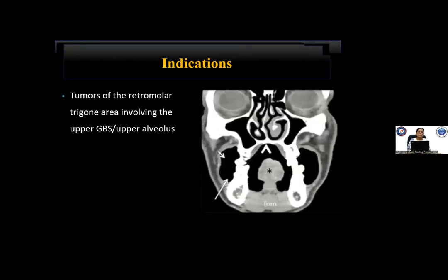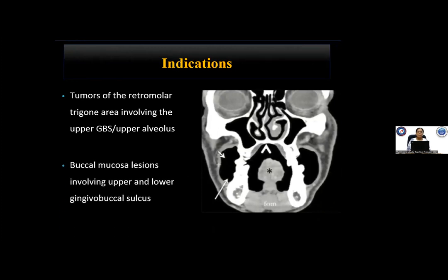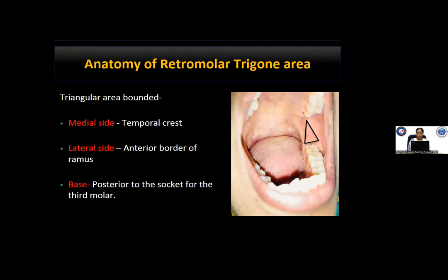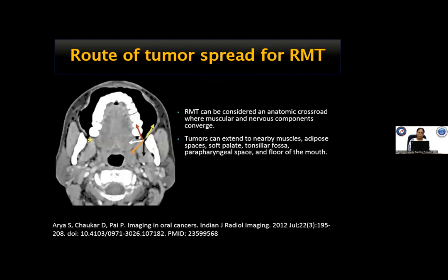The indications of bite composite resections include any tumor involving the retromolar trigone area or upper angulars, and buccal mucosa lesions involving the upper and lower gingivo-buccal sulcus. The retromolar trigone is a triangular area formed medially by the temporal crest on the mandible, laterally by the anterior border of the ramus, and the base is formed by the posterior socket of the third molar. The retromolar trigone is considered an anatomic crossroad where muscular and nervous components converge.